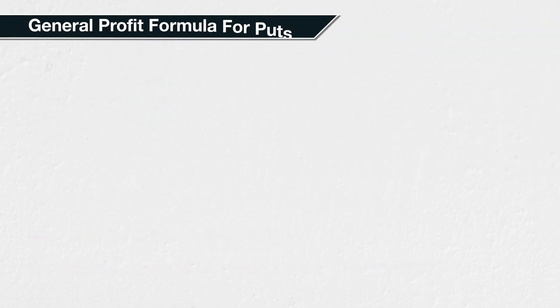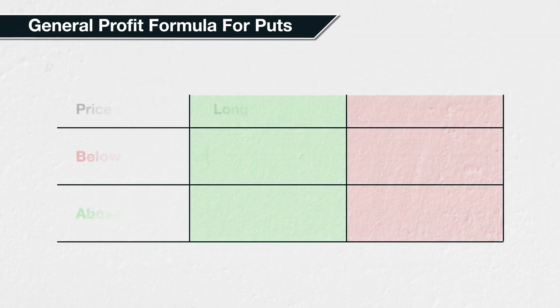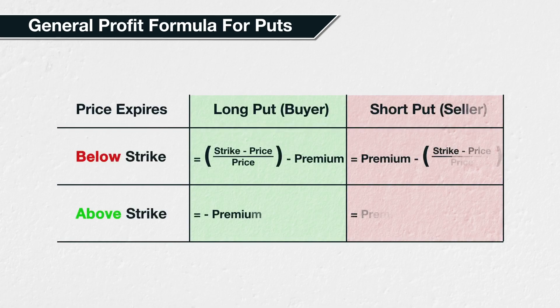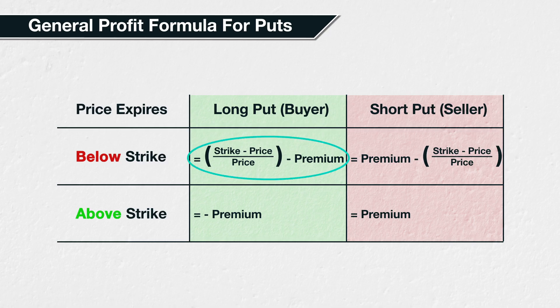Before we work through some more examples, it's worth expressing this process as a general formula. As with our calculations from section 5, if the put option expires out of the money — that is, the underlying price is above the strike price at expiry — then the buyer's loss is equal to the premium paid for the option. If the underlying price is below the strike price, then we can calculate the profit or loss in Bitcoin using this formula. Any profit for the buyer is a loss for the seller, and vice versa. So the formulas for the seller's profit or loss are the negative of the formulas for the buyer's profit or loss.